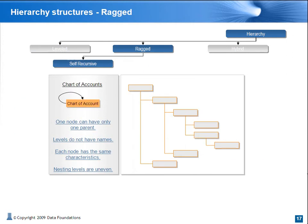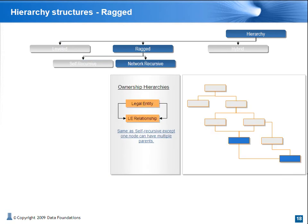Ragged hierarchies start with basic one-parent-multiple-child nodes, as in chart of accounts. Each node has the same attributes or characteristics as its parent. There is no concept of levels or names given to the levels. As mentioned earlier, the root to leaf for one node can vary from one to another. The variation of ragged hierarchy, as in ownership hierarchies, we call network recursive, as a node can belong to multiple parents. If effective dating is set on relationships, a simple ragged hierarchy will become network recursive in its underlying model.